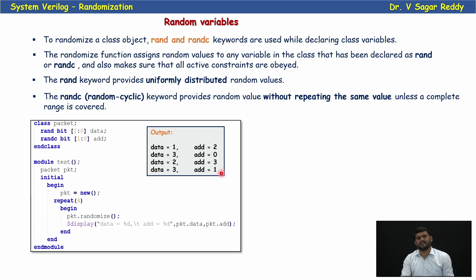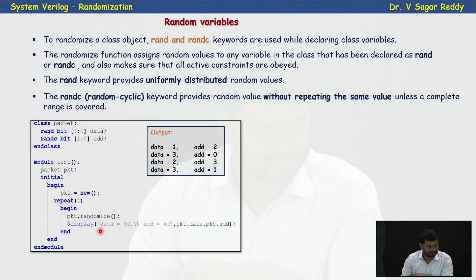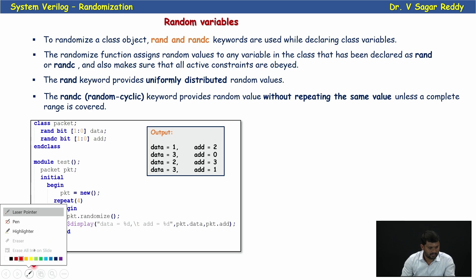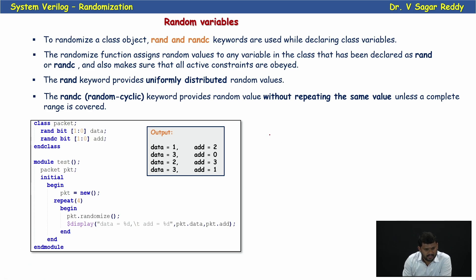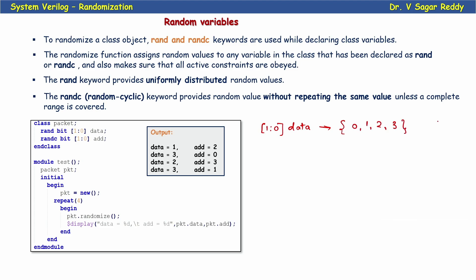Now let's see the basic difference between rand and randc. I declare a variable data as bit type, one down to zero. The possible values for this data are 0, 1, 2, and 3 — a range of 0 to 3. The possible bit combinations are 00, 01, 10, and 11.